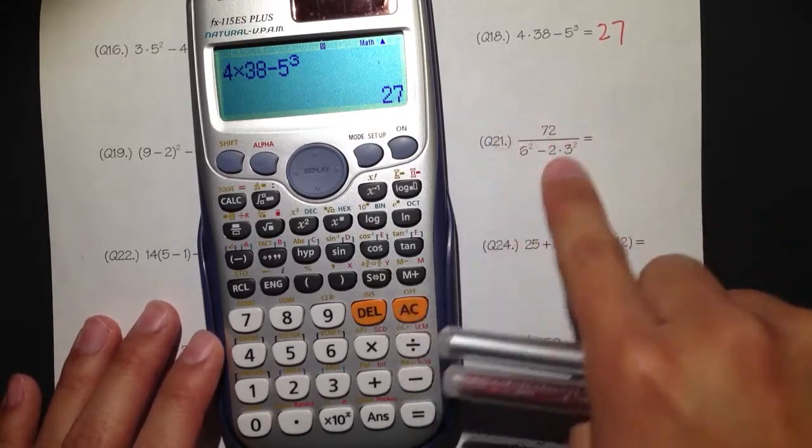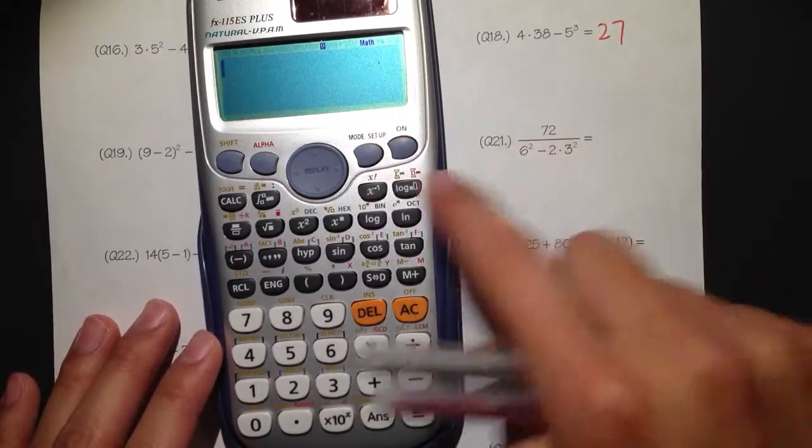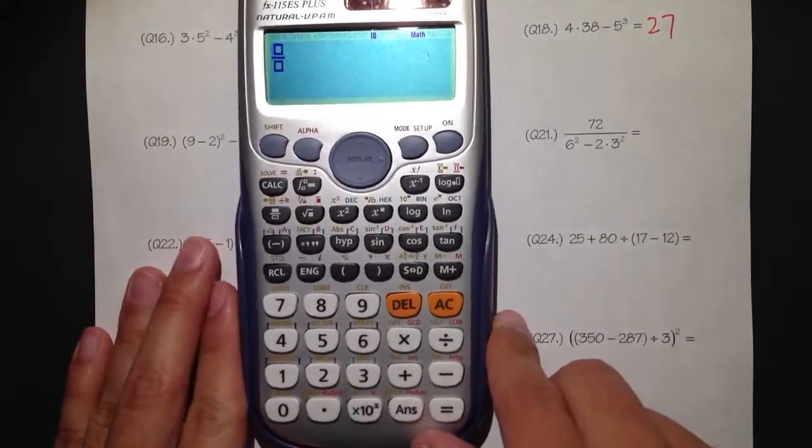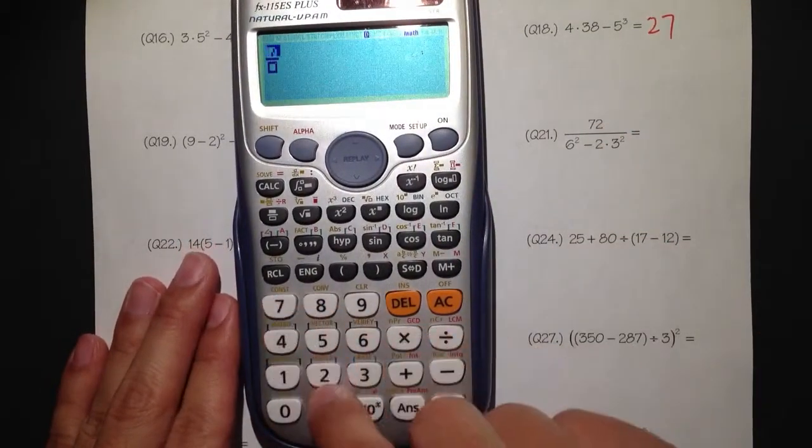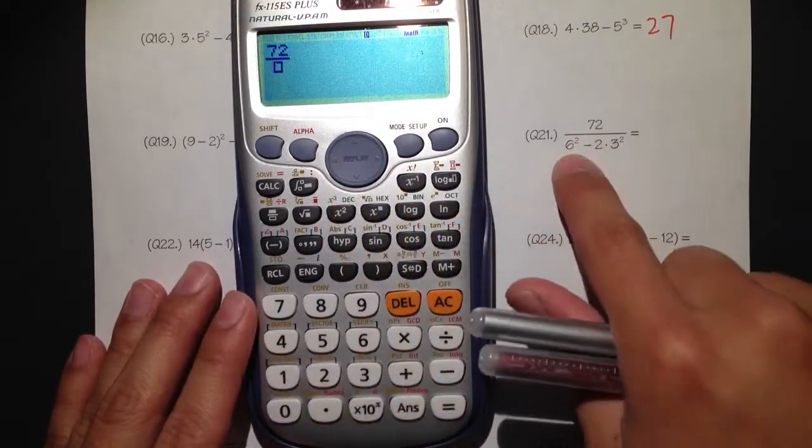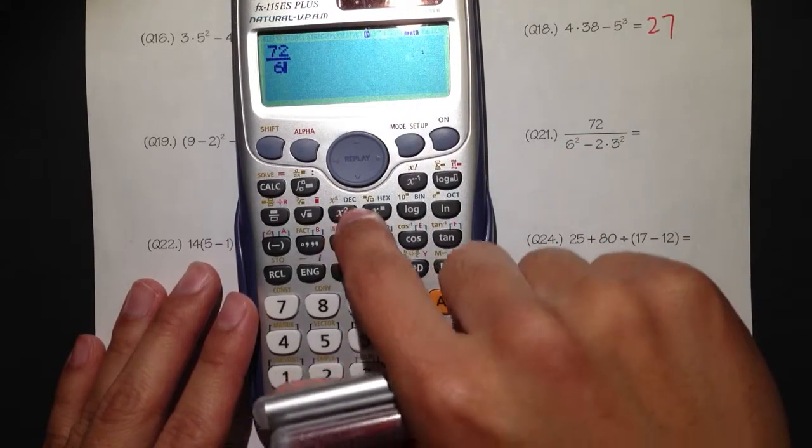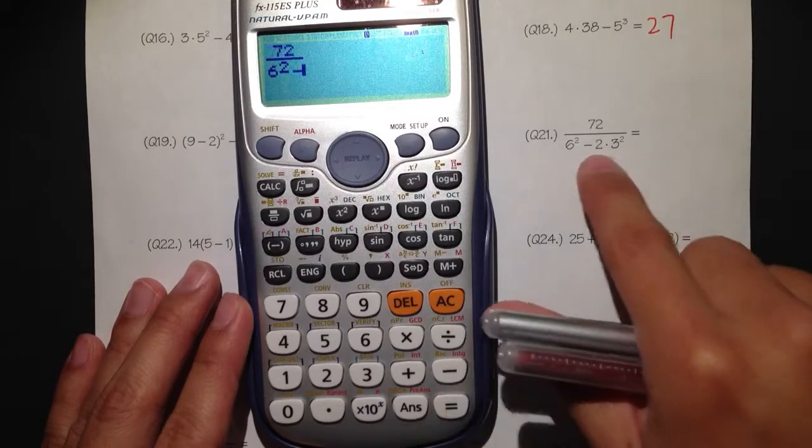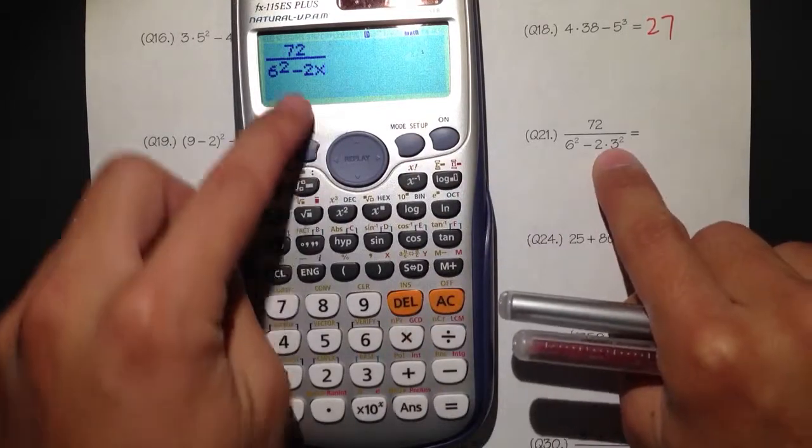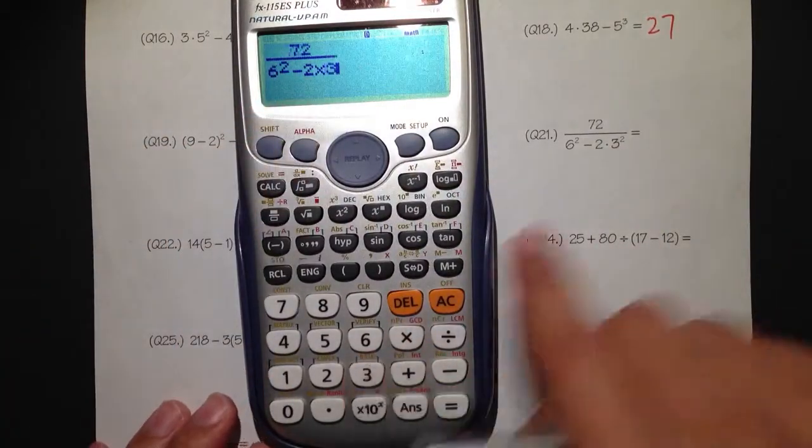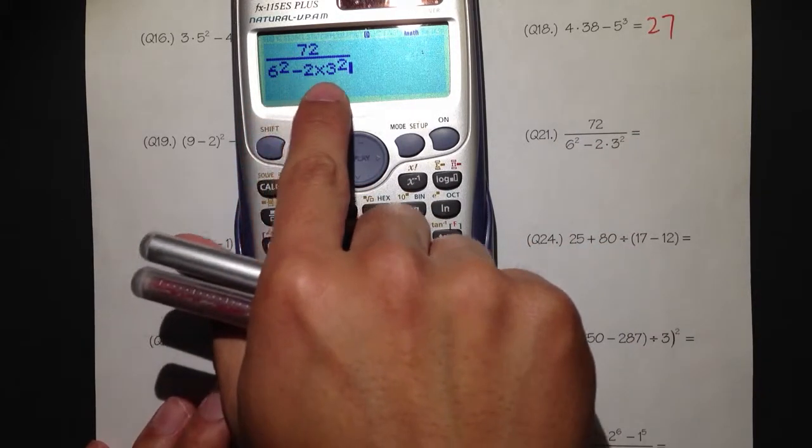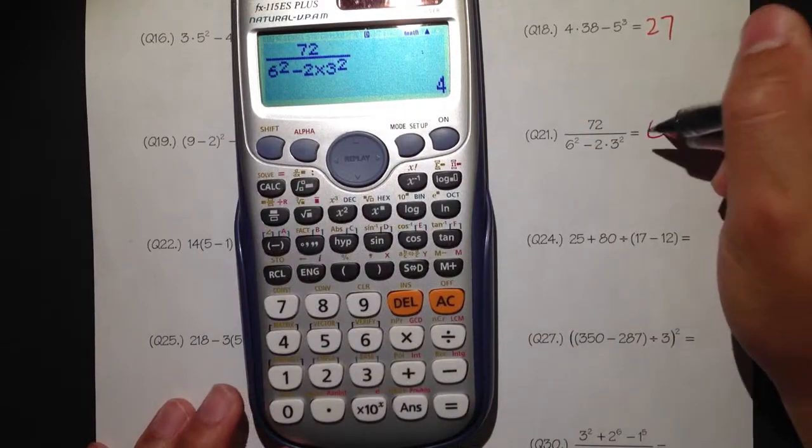Number 21. Again, we see a big fraction, so we need to start off by having the big fraction first. Hit the fraction key. On the top, we have 72. That's it. Then we should go down to the denominator by pressing the down button. 6 square, so hit the 6, and we can do the shortcut: square. Minus 2 times 3 to the second power. So minus 2, times 3, to the second power. So we can do the shortcut. So 6 square minus 2 times 3 to the second power, equal. That's equal to 4.